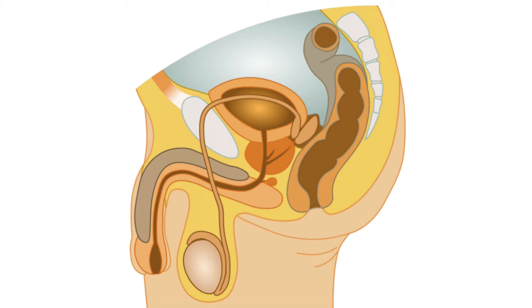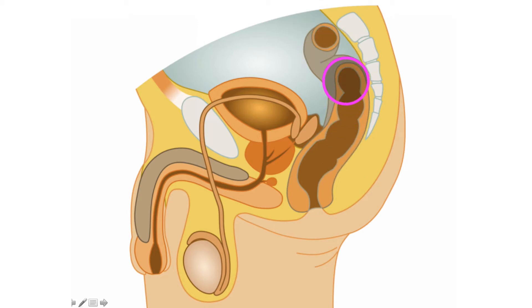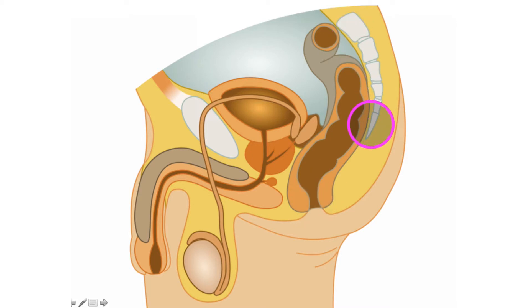Let's take a look at the male reproductive structures. First off, let's look at what are not reproductive structures. This is the rectum and anus, with the sacrum and the coccygeal vertebrae. This is actually part of the pelvic bone.